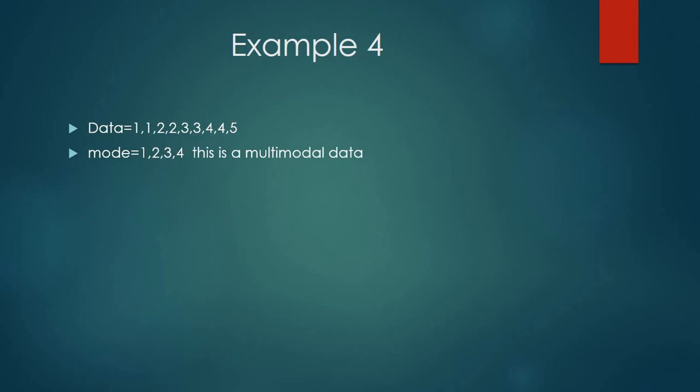Another example: one twice, two twice, three twice, four twice, and a single five — so the mode will be one, two, three, and four. This kind of data is called multimodal data. As mentioned, R doesn't have any built-in function for finding the statistical mode. It does have functions for mean and median, but not for mode. I also searched online but didn't find any satisfying function.